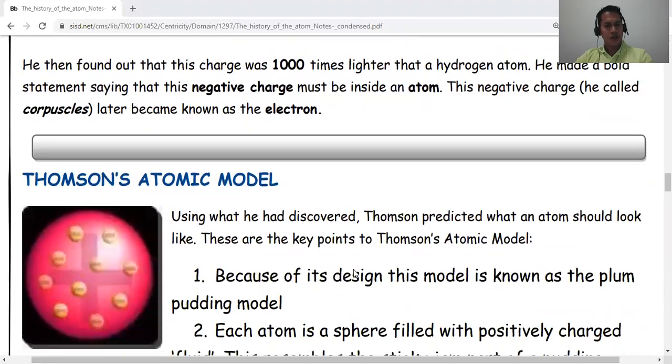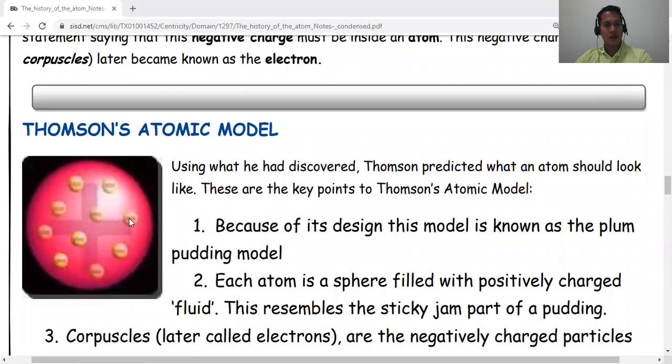As we can see here, this is Thomson's atomic model. It's quite the same as Democritus and John Dalton, but as you can see, there are negative charges around this sphere. Now, I would like to challenge all of you, especially my students, to come up with your own model of the atoms. I would like you to create your model and then explain to me.